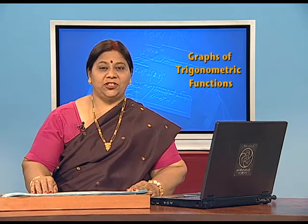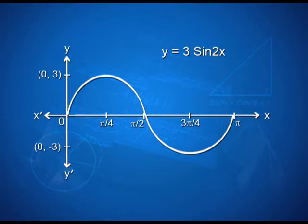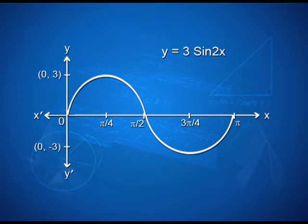Let us pick up one more example to see how we can sketch the graph of y = 3 sine 2x. To obtain this graph, we first draw the graph of y = sine x in the interval 0 to 2 pi, and then divide the x-coordinates of the points where it crosses the x-axis by 2. We can see that the graph goes from 0 to 3, then decreases and reaches pi by 2, and we can complete it similarly up to pi. This is the graph of y = 3 sine 2x.